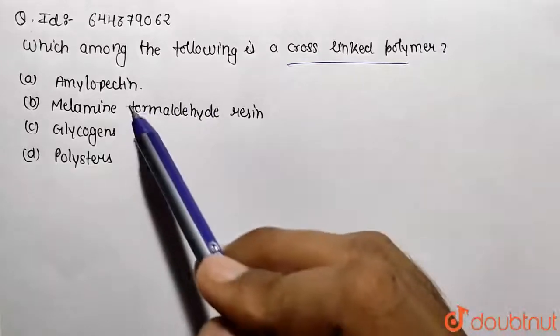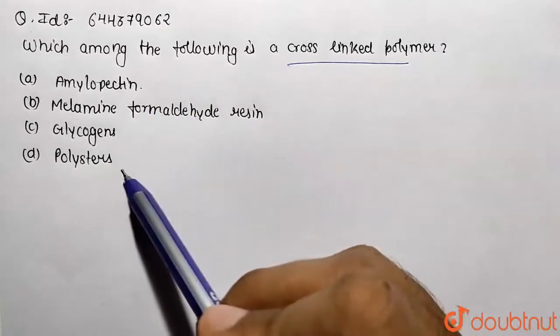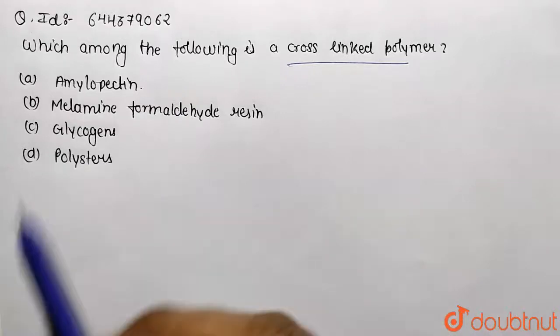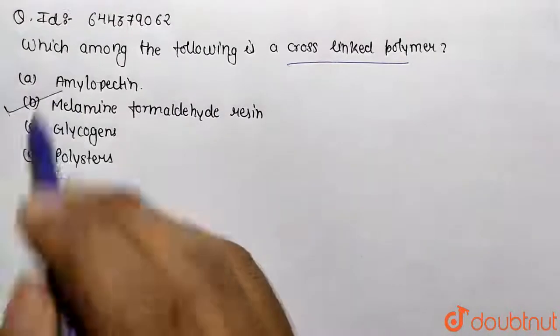We are given four sets of options: amylopectin, melamine formaldehyde resin, glycogen and polyesters. So basically what is our answer going to be? Option B is going to be the answer.